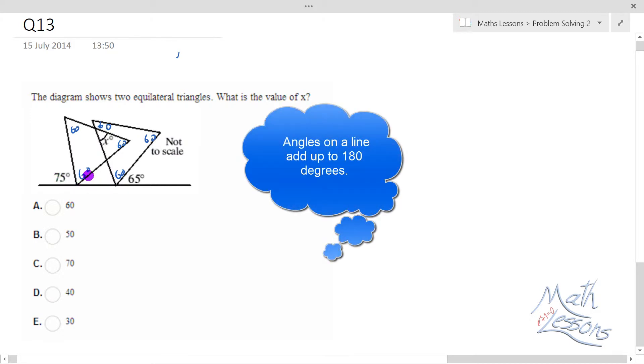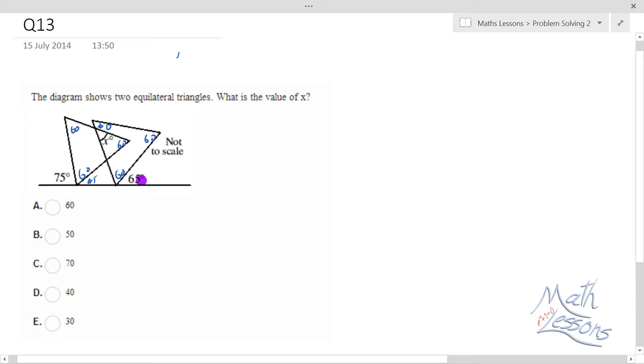So 75 plus 60 is 135, so add on another 45 to get us to 180. This 60 plus 65 is 125, so we're going to add on 55 to get us to 180.